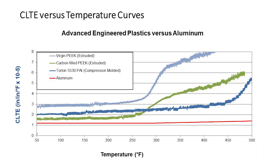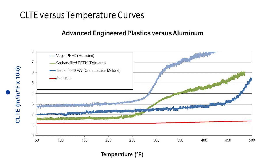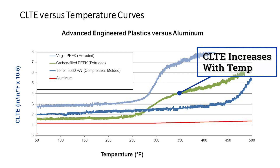Here is an example of the CLTE curves for four different materials — three different polymers and one metal, aluminum. The CLTE is documented on the vertical axis, while temperature is documented on the horizontal axis. You will see that as the temperature increases, all the materials show an increase in the coefficient of thermal expansion.